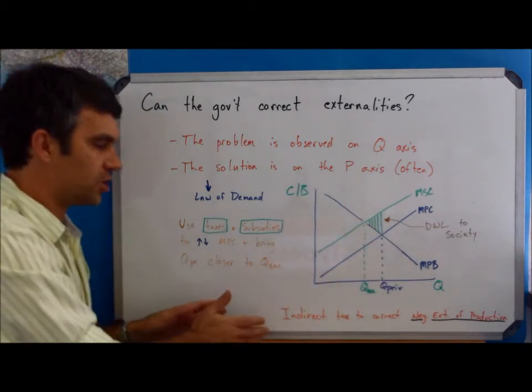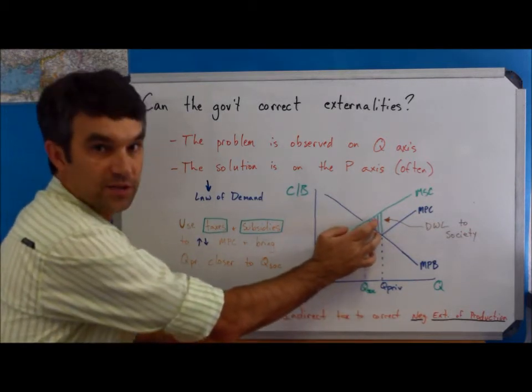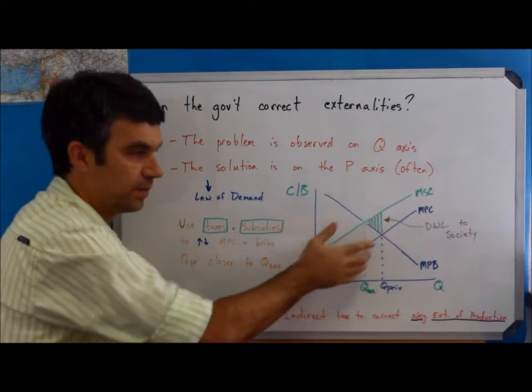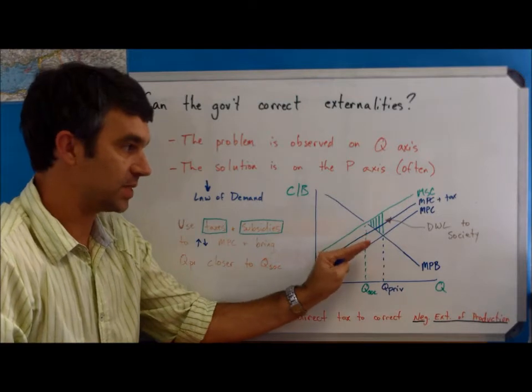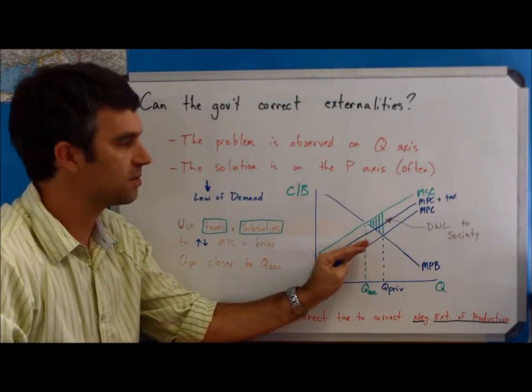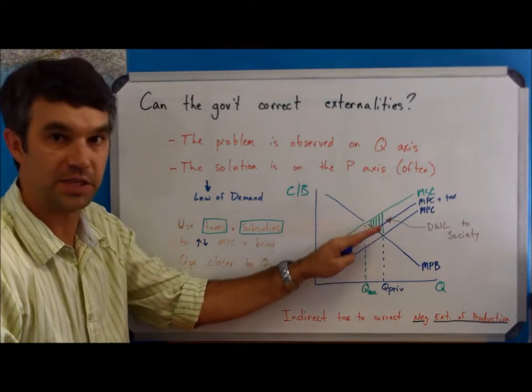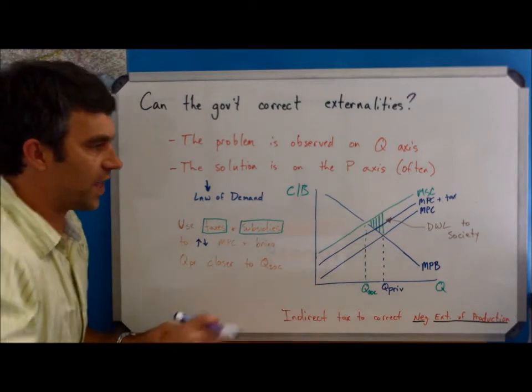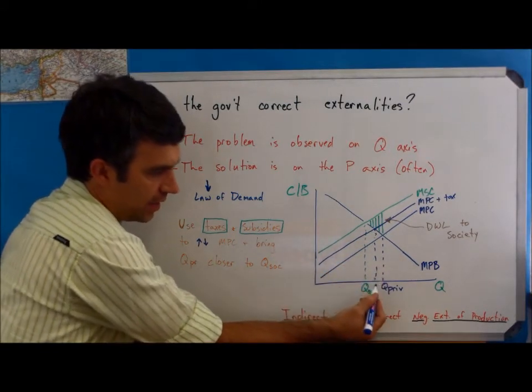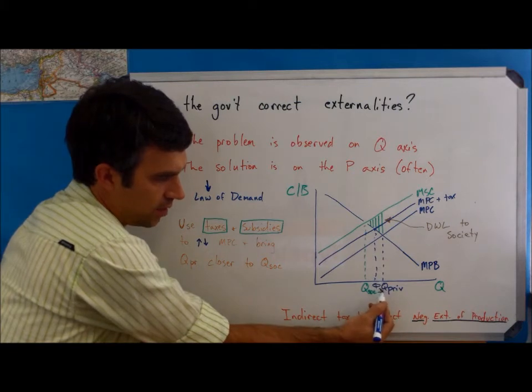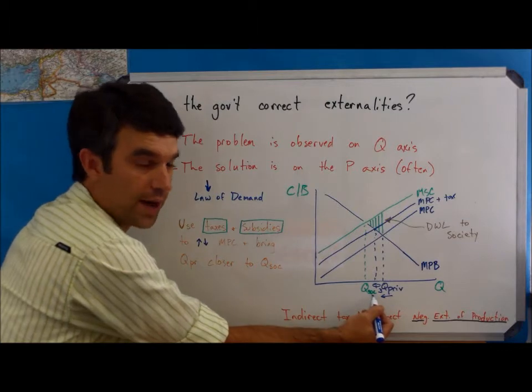So what we're going to show is how we can use an indirect tax to reduce the size of this deadweight loss to society. This is really where we see our problem, the green-shaded triangle. We can see that when the government adds a specific indirect tax to the purchase of cigarettes, it's going to be seen as a cost that moves the MPC curve up. What that means is that the quantity demanded and supplied in the market is going to move here to Q3. So it's going to be getting closer to the socially optimal quantity.